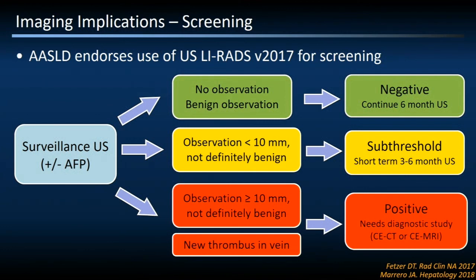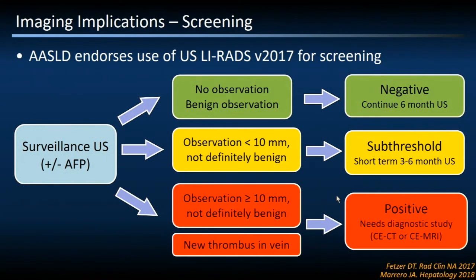Surveillance ultrasound in the United States is stratified into one of three potential outcomes using LIRADS criteria. It's either normal or negative — in which case six-month follow-up is recommended — or it contains a sub-threshold observation less than 10 millimeters, which should be followed with a three- to six-month ultrasound. LIRADS recommends this rather than CT or MR as general practice. Studies that are obviously positive — with an observation 10 millimeters or more, or new tumor thrombus — warrant a diagnostic liver CT or liver MR.